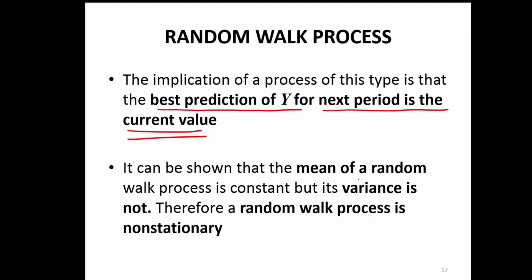It can be shown that the mean of a random walk process is constant, but the variance is not. Mean of the random walk in many situations can be constant, but variance is never the case. And that is why random walk is a typical case of a non-stationary series. But many non-stationary series can be made stationary and you can do forecasting — except in the random walk process; that is where the difficulty is.